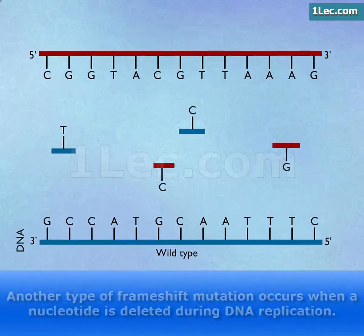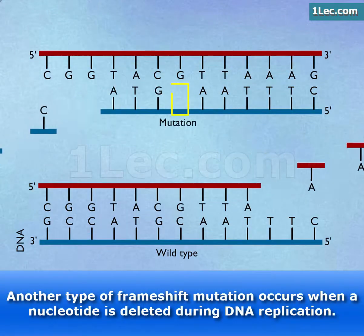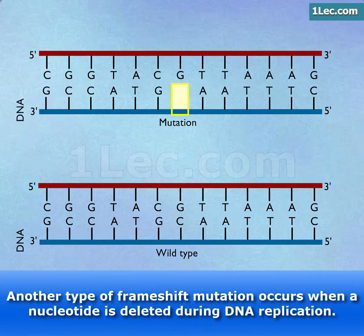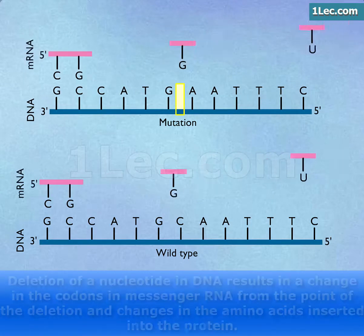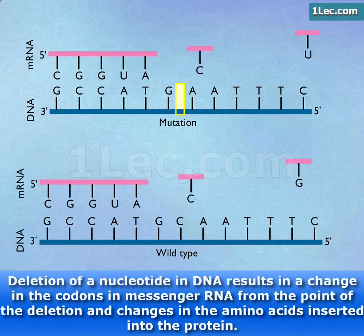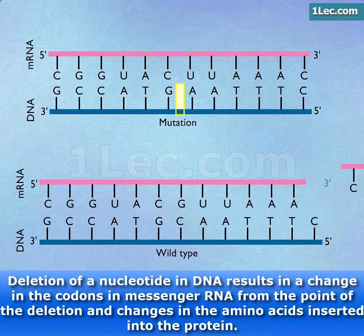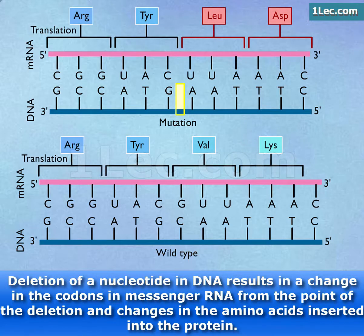Another type of frameshift mutation occurs when a nucleotide is deleted during DNA replication. Deletion of a nucleotide in DNA results in a change in the codons in messenger RNA from the point of the deletion and changes in the amino acids inserted into the protein.